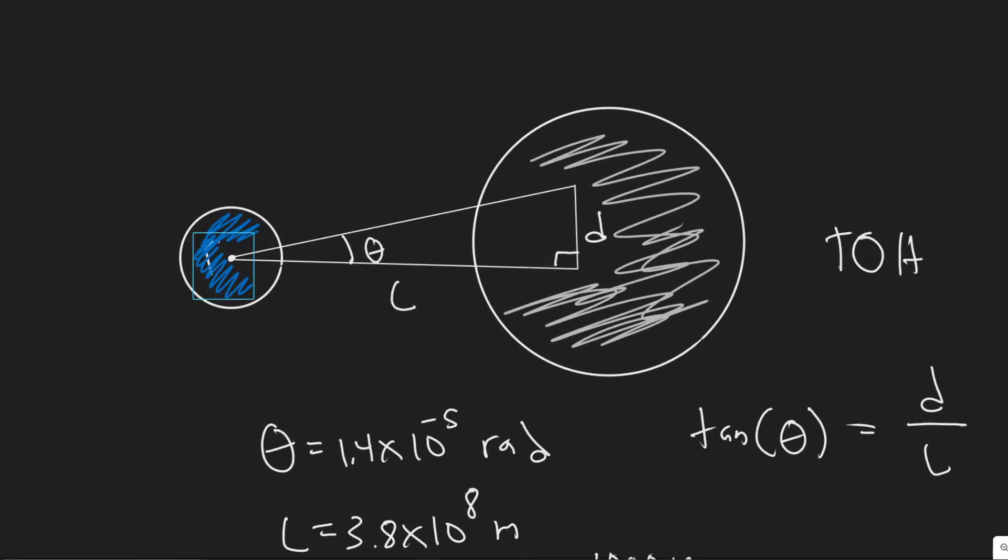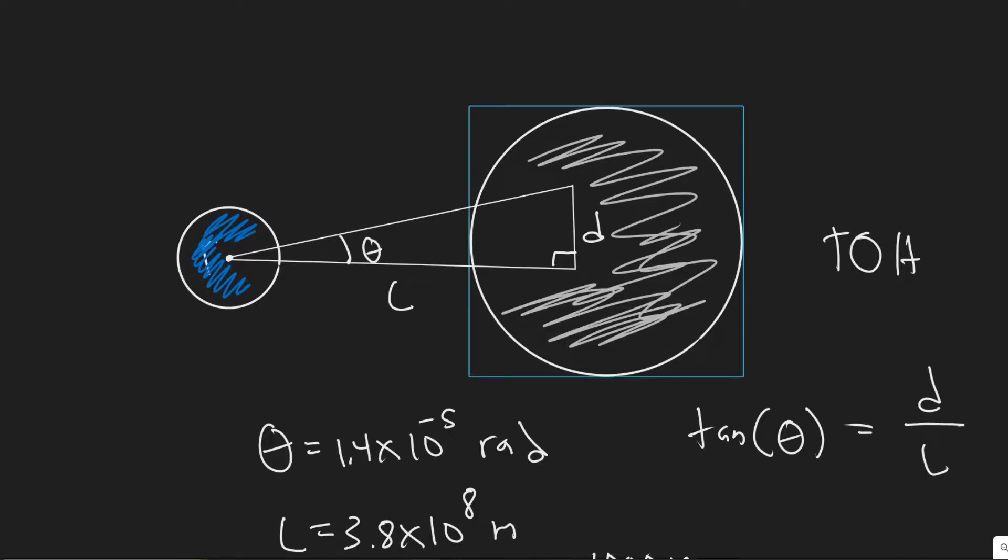So we have the earth here and it's going to be shooting this laser onto the moon. You can imagine it's firing like this - it has some angle theta and then this diameter is like a circle. This side of our triangle here is like the diameter of the circle and it's going to have some angle theta where L is the distance from the earth to the moon.